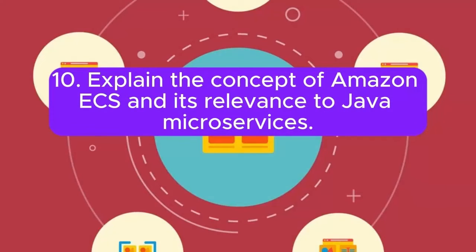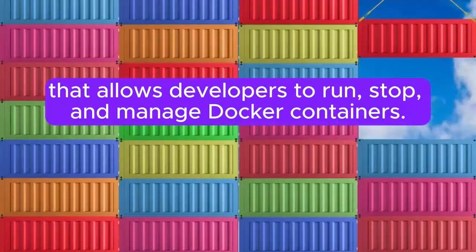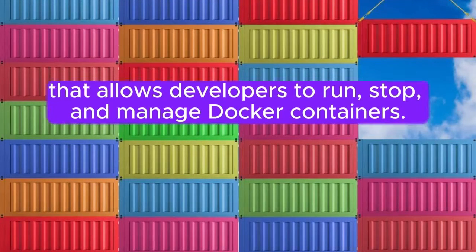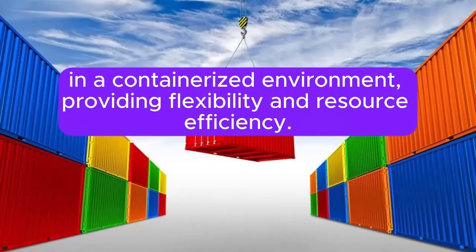Question 10: Explain the concept of Amazon ECS and its relevance to Java microservices. Amazon ECS Elastic Container Service is a container orchestration service that allows developers to run, stop, and manage Docker containers. Java developers can use ECS to deploy and scale microservices-based applications in a containerized environment, providing flexibility and resource efficiency.